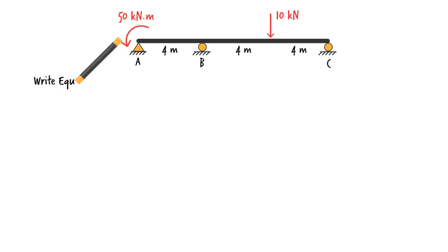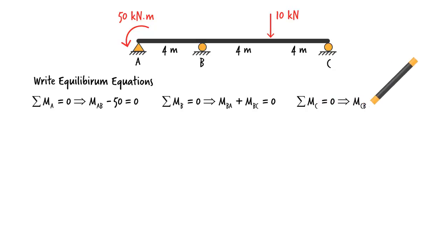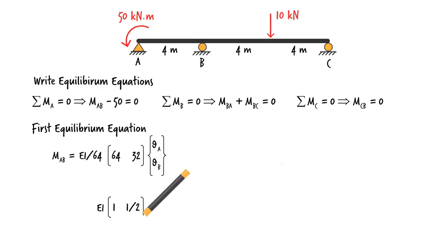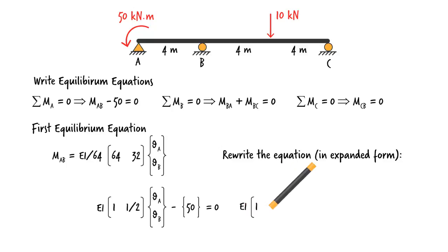Now we can turn our attention to joint equilibrium equations. We have three of them. Here they are. To write the first equation in matrix form, we need MAB in matrix form. It is... So our equilibrium equation becomes... It can also be written like this...